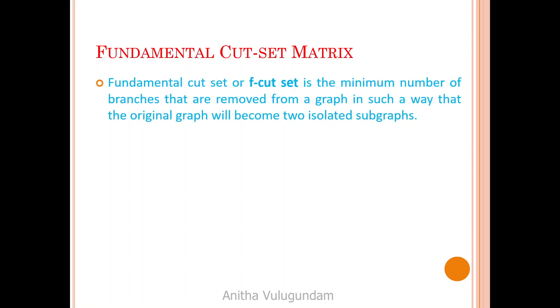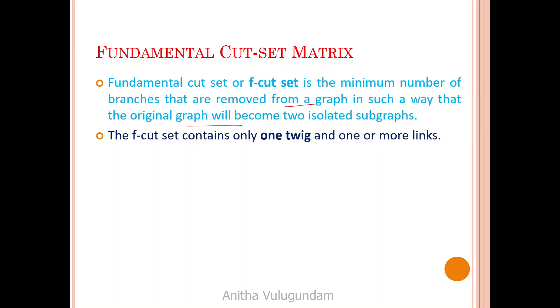Welcome to this video on the fundamental cut set matrix. A fundamental cut set (F cut set) is the minimum number of branches removed from a graph such that the original graph becomes two isolated subgraphs. The F cut set contains only one twig and one or more links. Branches of a tree are called twigs.